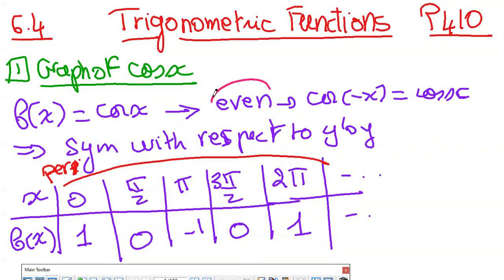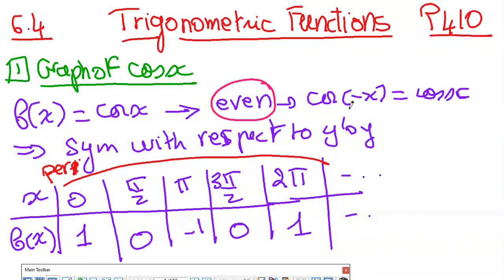How do we know that cosine is even? To know if a function is even or odd, we need to replace x by minus x. If it gives the same answer, it means it's an even function. And an even function is symmetric with respect to the y-axis. So now we're going to see graphically how it's symmetric with respect to y.